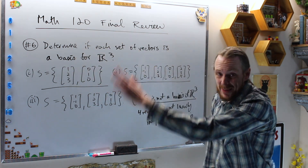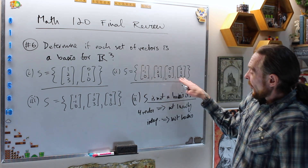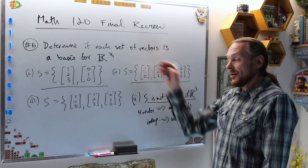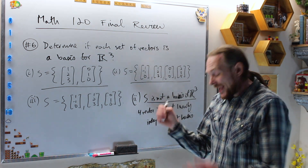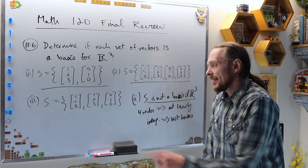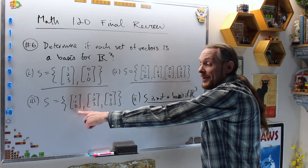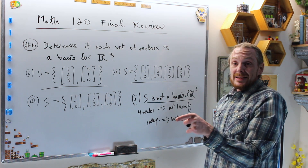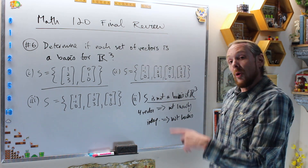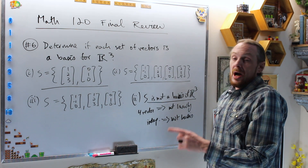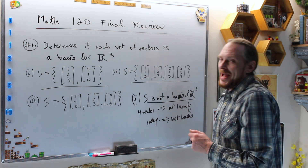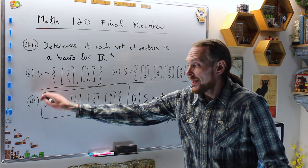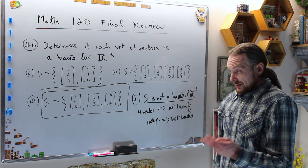So in the case with fewer vectors than the dimension we can't span R³; in the case with four vectors in three-space they can never be linearly independent. In anti-Goldilocks land — exactly three vectors in three-space — it's either yes independent, yes spanning, yes basis, or no, no, no. Let's check case three.